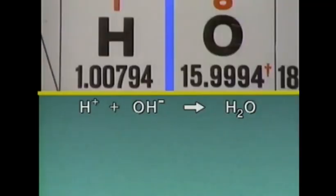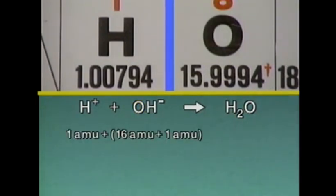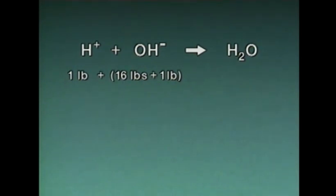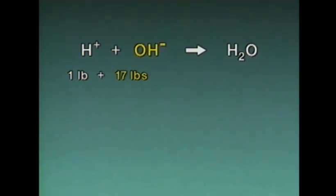From the periodic table, we can determine that hydrogen has an atomic weight of approximately one atomic mass unit and oxygen has an atomic weight of approximately 16 atomic mass units, so their relative weights are 1 and 16. These weights can be expressed using any units of weight. We'll use one pound for hydrogen and 16 pounds for oxygen. So one pound of hydrogen ions will react with 17 pounds of hydroxyl ions (16 pounds of oxygen plus one pound of hydrogen) to produce 18 pounds of water.